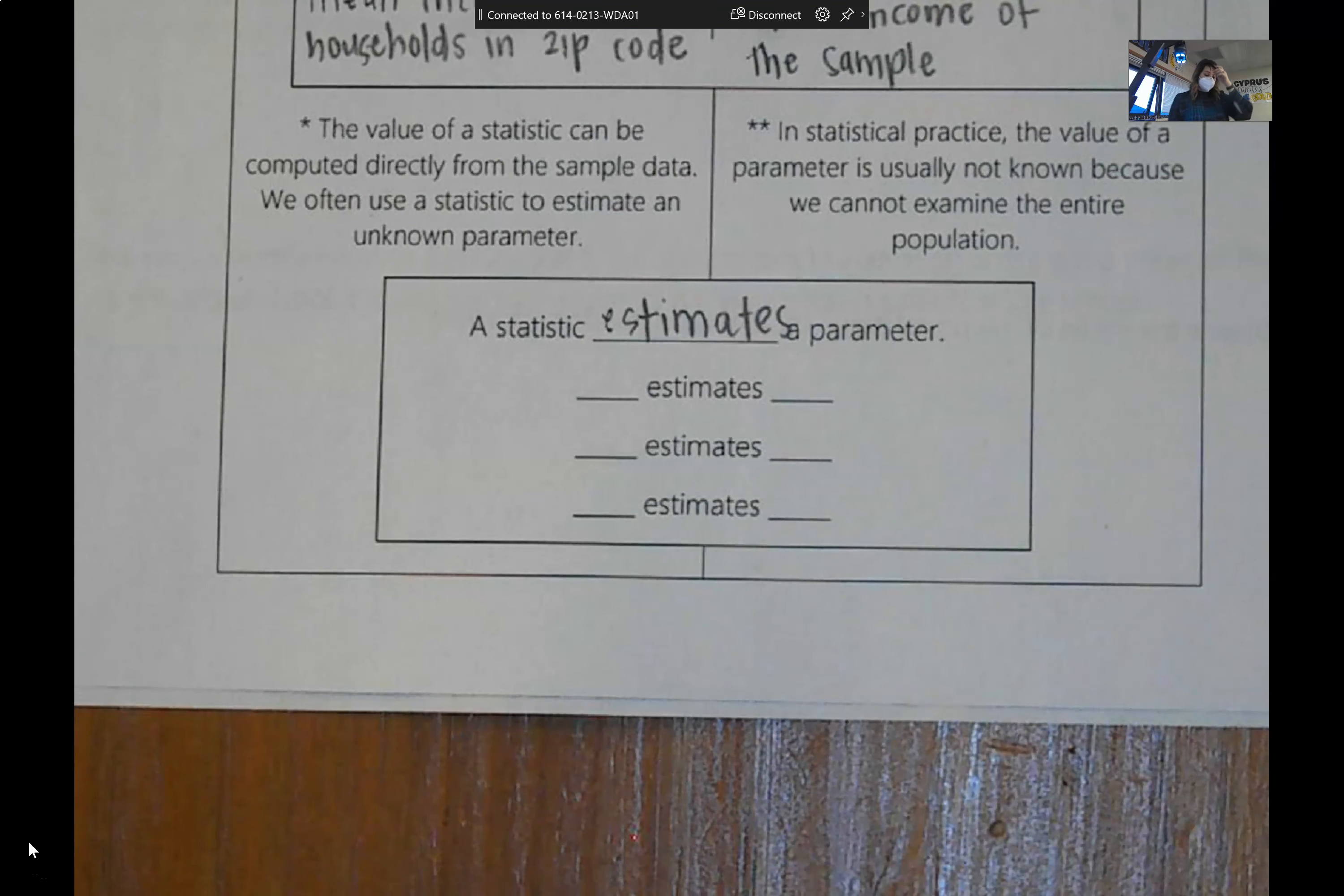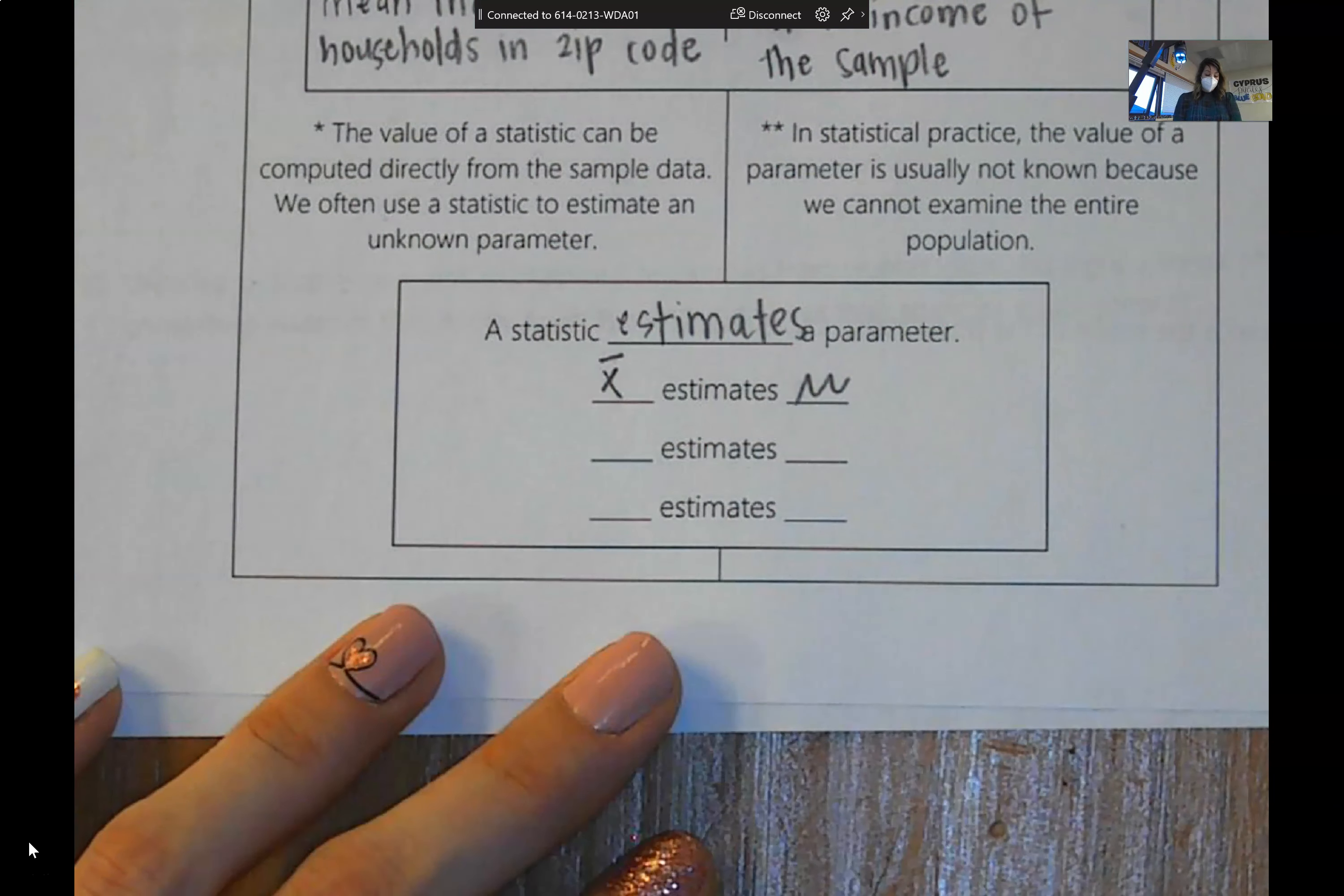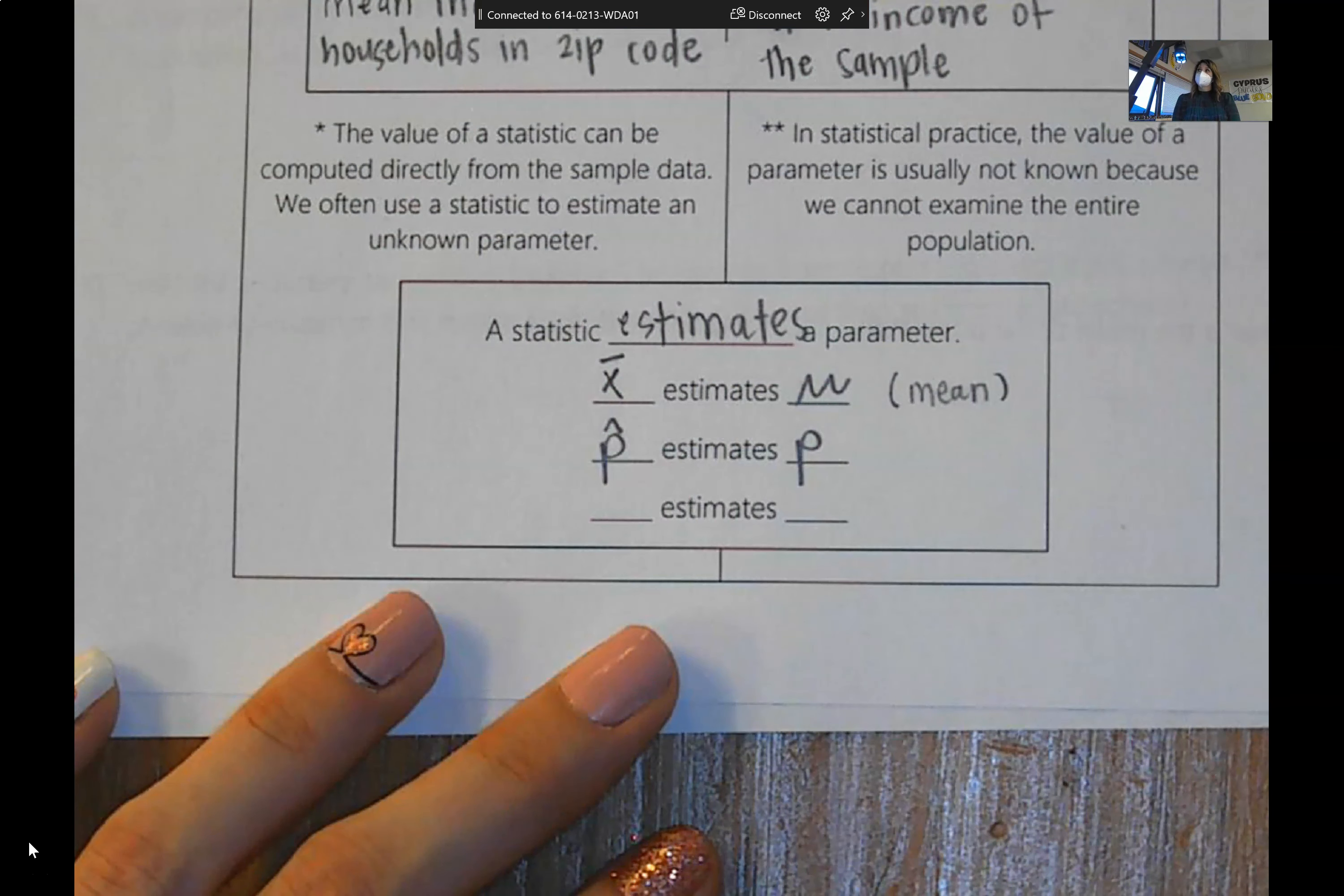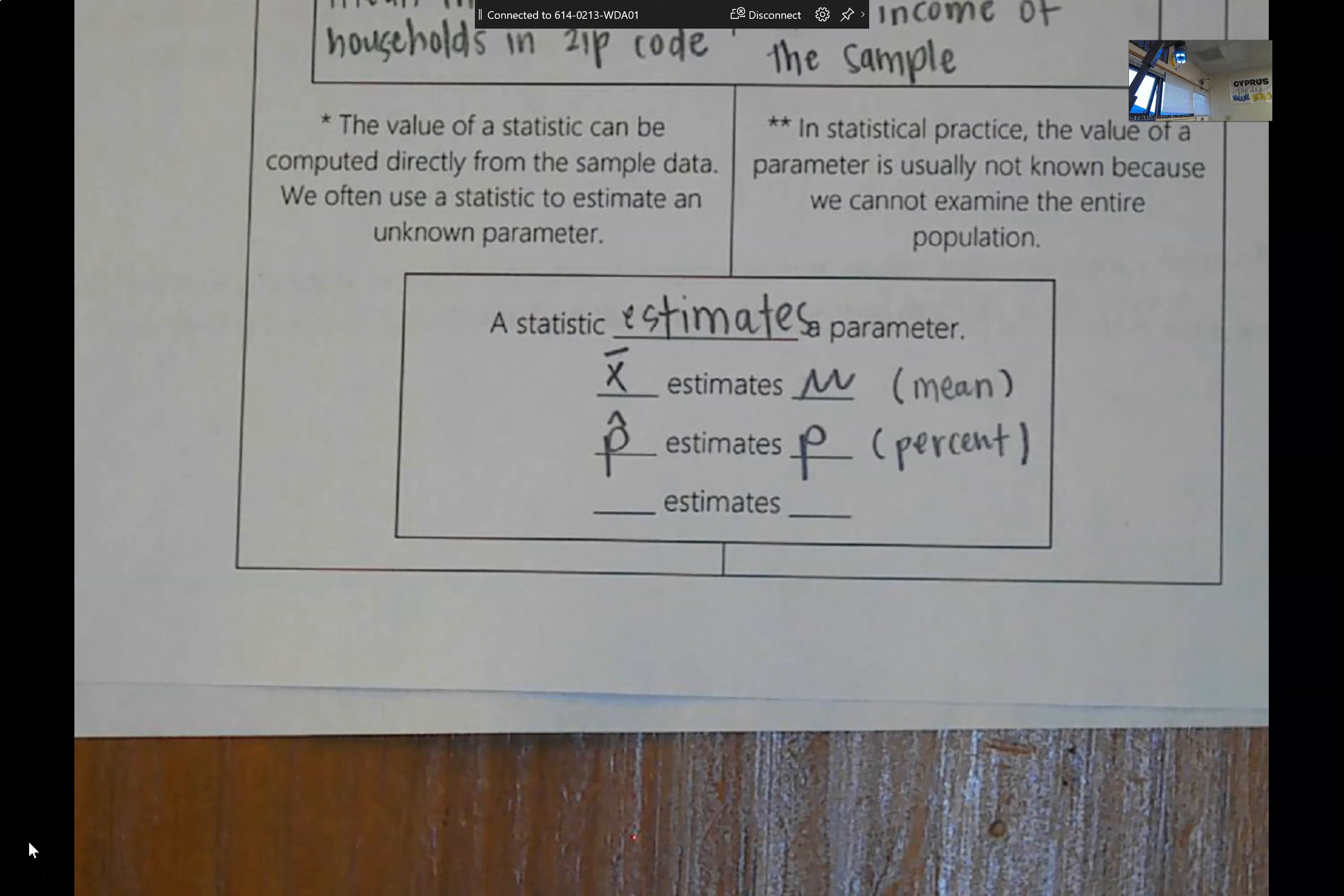The most common ones that you will see are the following. X bar estimates mu. So those are both averages. These are both means. P hat estimates P. And in this case, we're talking about a percent or a proportion of the population. So for now, I think it would be good for us to write percent instead of proportion. Let me give you an example of what P would be. So let's say we want to estimate the percent of people that watched the inauguration yesterday.